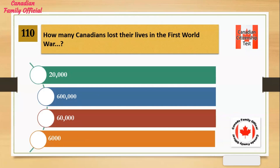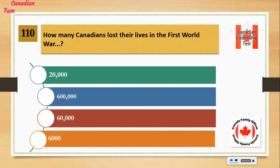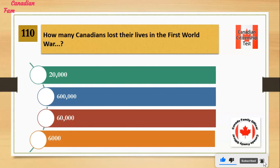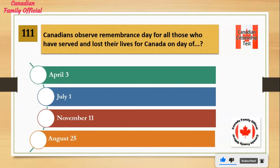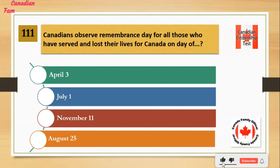How many Canadians lost their lives in the First World War? Number 1: 20,000. Number 2: 600,000. Number 3: 60,000. Number 4: 6,000. And the answer is 60,000.